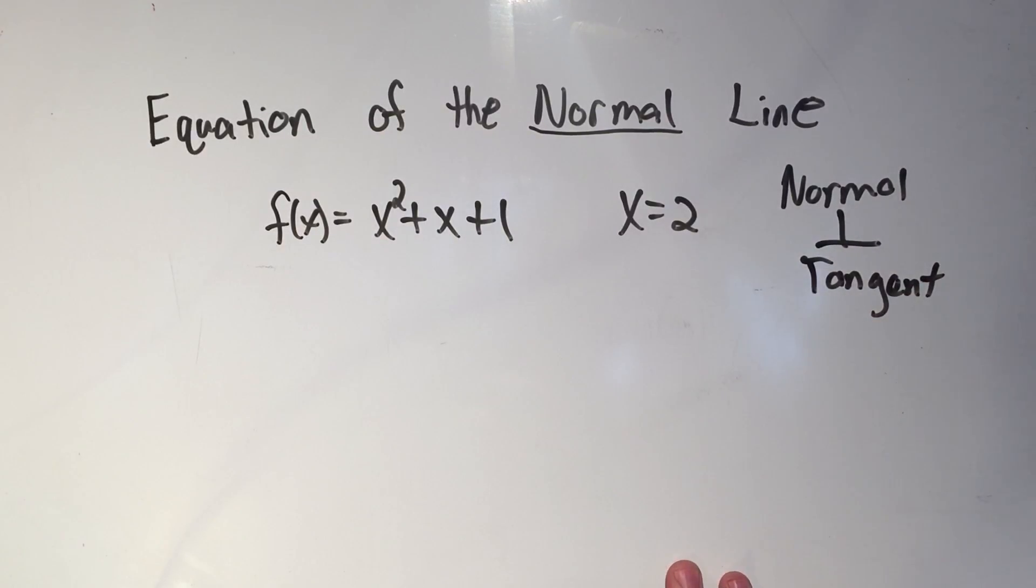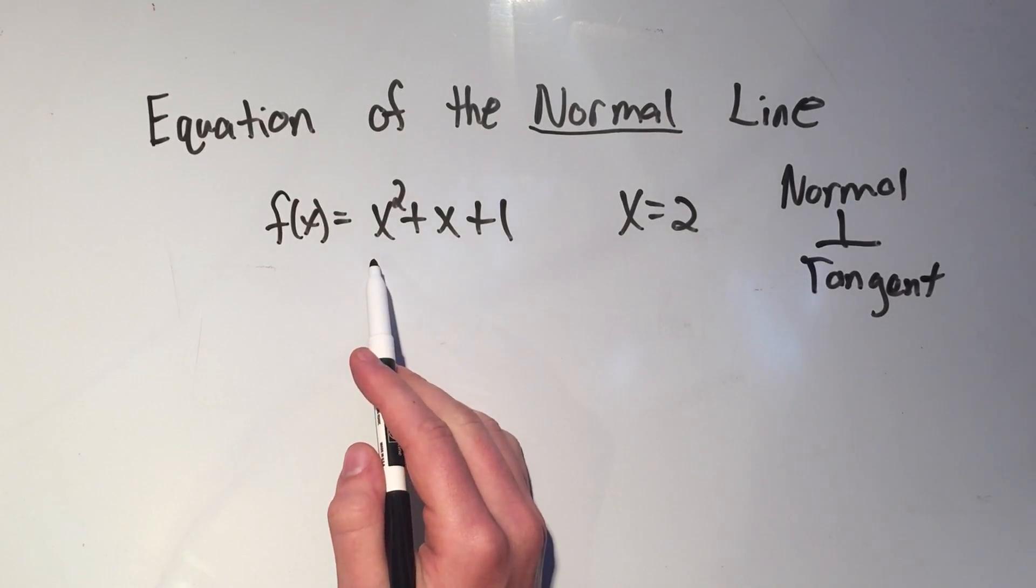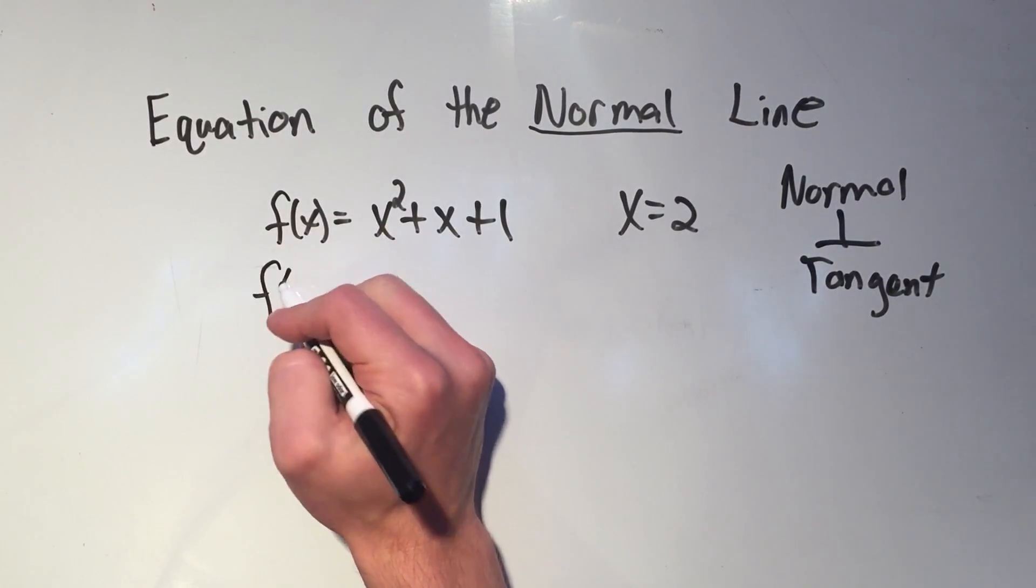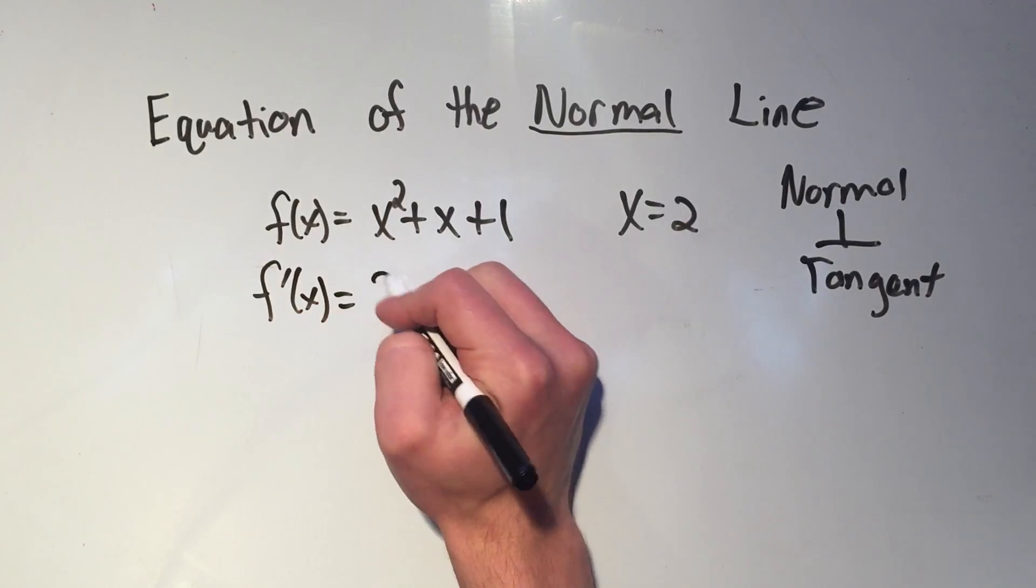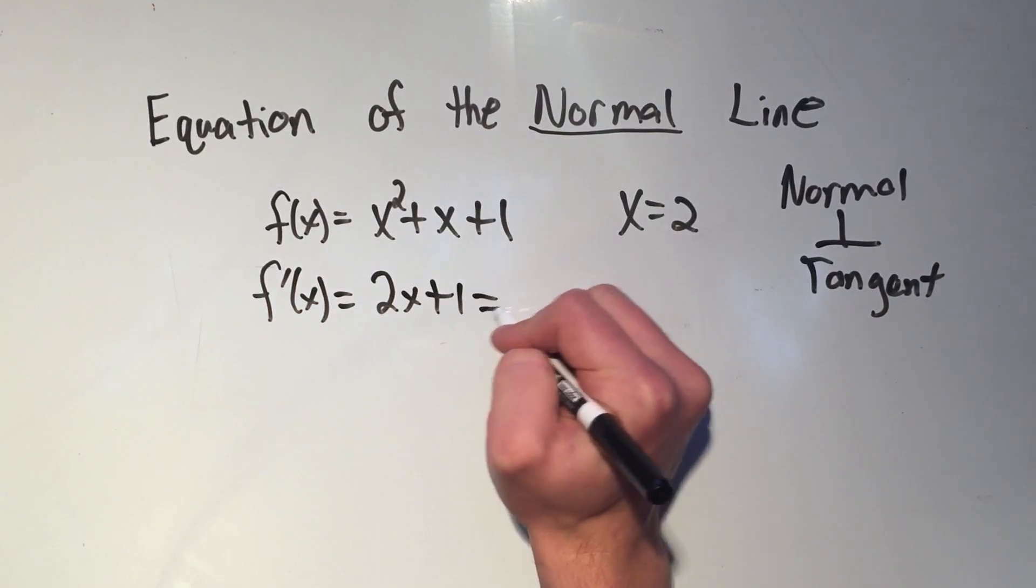So this is not a common question, but I have seen professors ask it before. So to find the equation of the tangent line, you need to take the derivative, and the derivative will give you the slope of the tangent line,